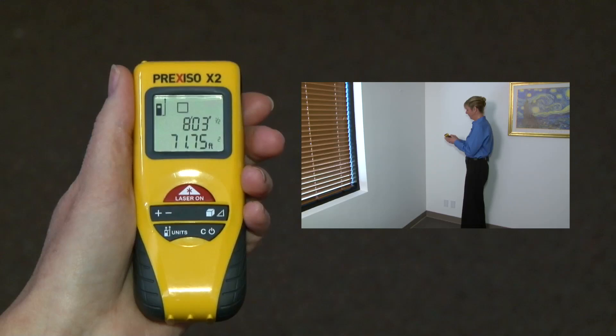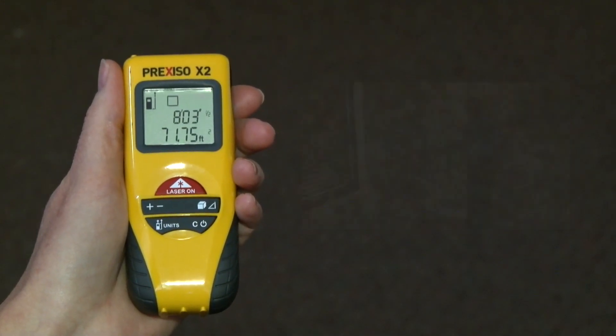Instantly, the Prexiso X2 shows you the total square feet or total square meters you just measured.